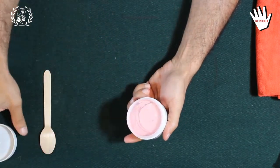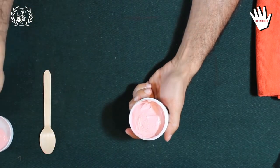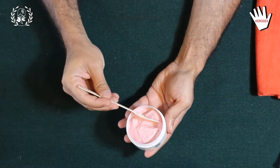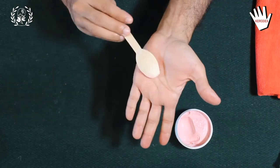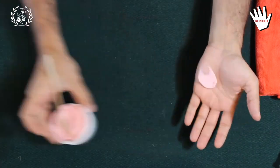1. Kerodex Barrier Cream can be used against harmful chemicals, paints, resins, etc. to prevent skin diseases on the hands.